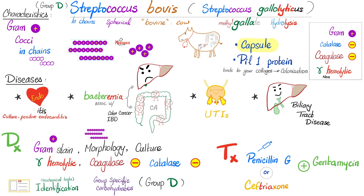Key virulence factors for Streptococcus gallolyticus include the capsule and something called PIL1 from pilus or pili, because it helps the bacterium bind to collagen and colonize the body. It is gram-positive, cocci in chains, and belongs to group D.